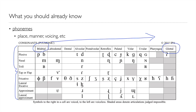Finally, for any combination of place and manner, we can also vary the activity of the vocal folds. That's voicing, and so it's possible to make a further contrast — for example, between P and B by vibrating the vocal folds in the case of B.